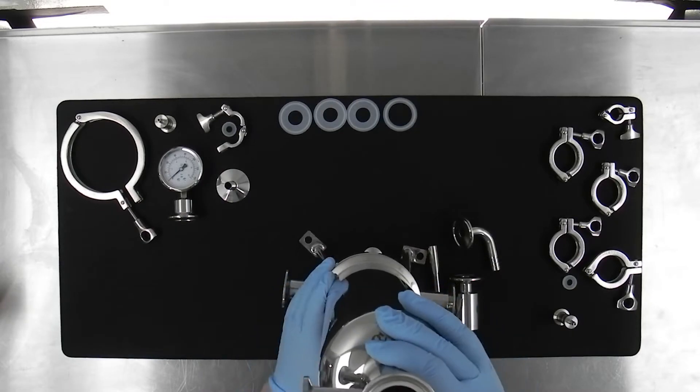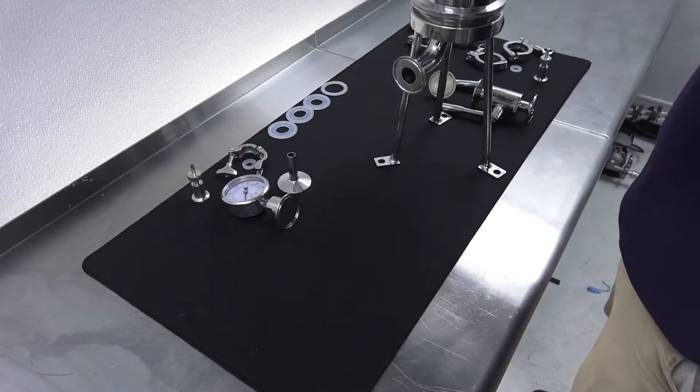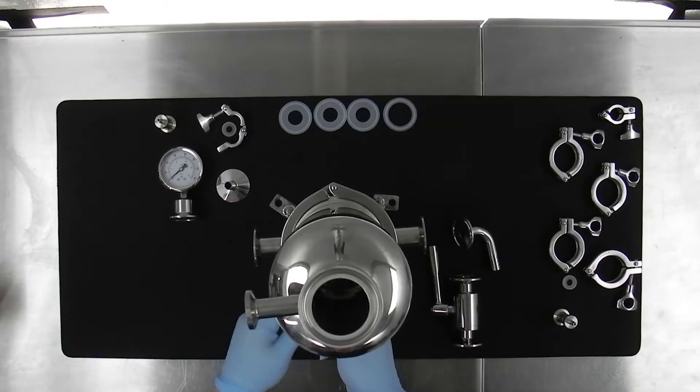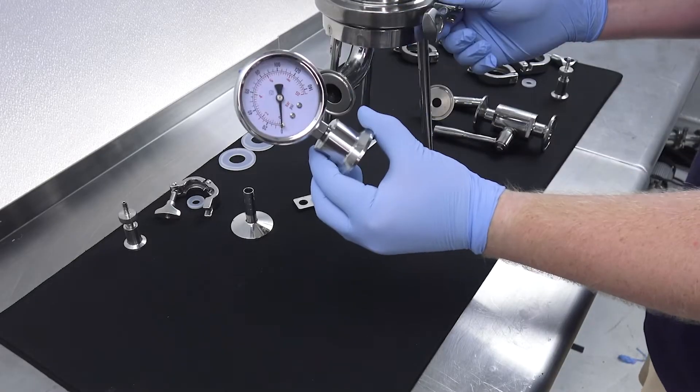It is ideal to have the bleed valve on the top of the housing body facing the inlet. Install the pressure gauge.